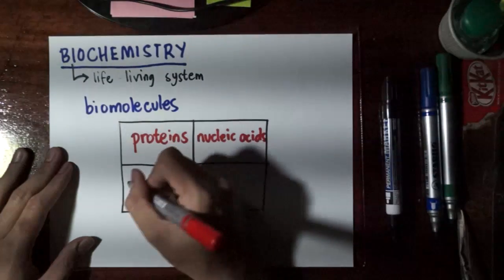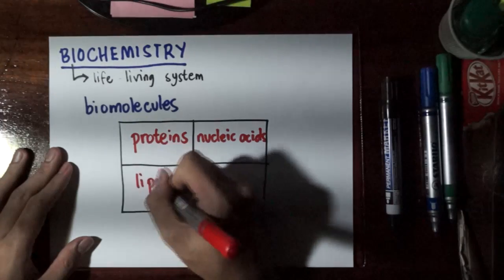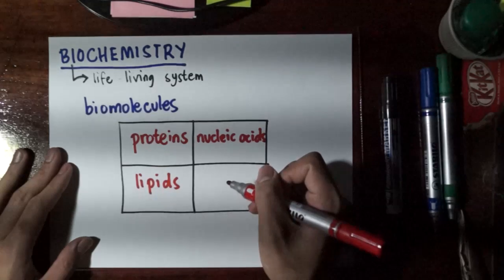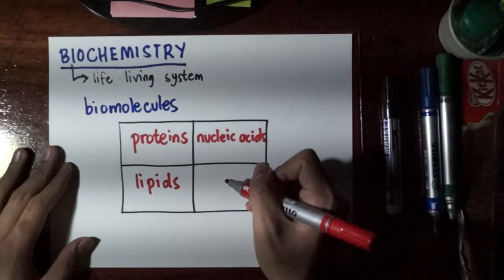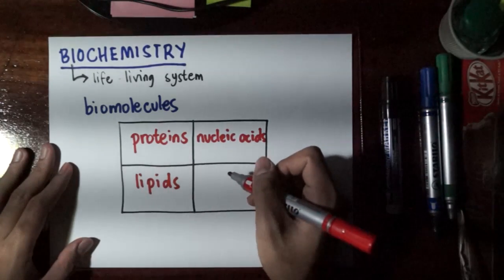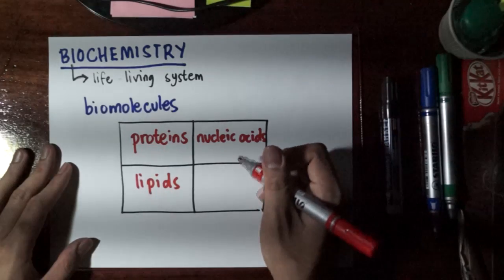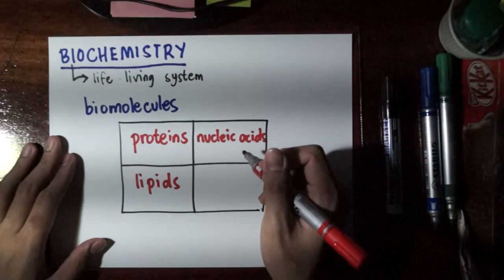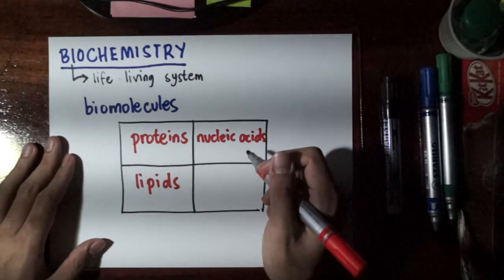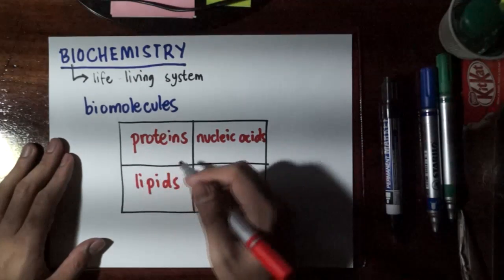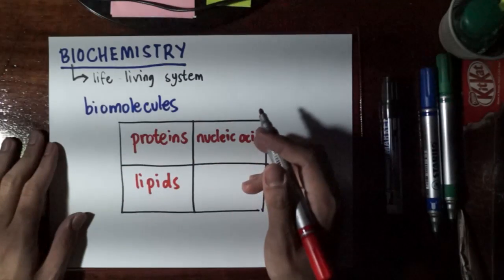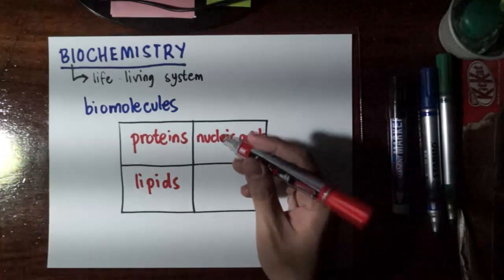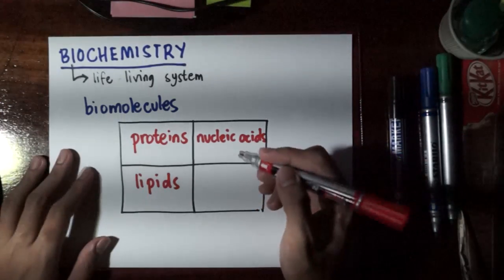Then the next would be lipids. They have also many different functions, but one main thing that they have in common is that they are very water insoluble, or in another way to put it, they are very non-polar. So that's their general classification. Because even in their structure, there is nothing really very common in the structure among different types of lipids.